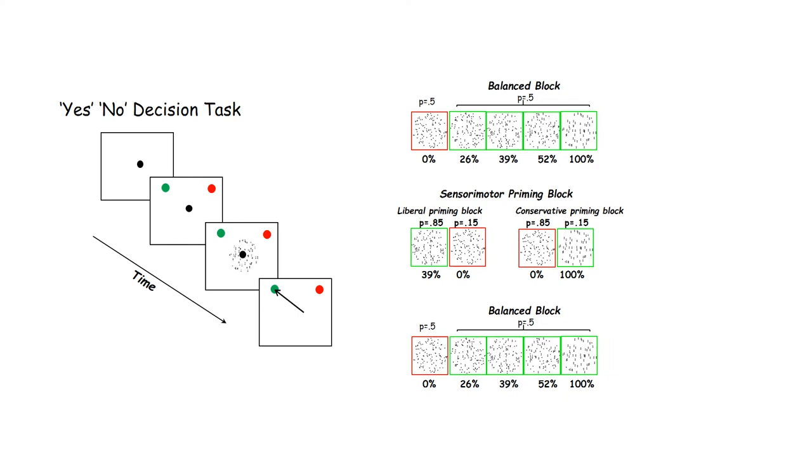The third block was identical to the first and contained equal yes and no trials. Based on the proportions of hit and false alarm trials, signal detection theory allows us to calculate a measure of sensitivity called D' and the position of the criterion called C.